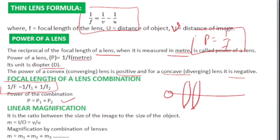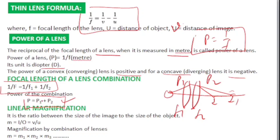For a combination of lenses, the object forms image I₁ through the first lens, and I₁ acts as object for the second lens, forming final image I. From this derivation, 1/f = 1/f₁ + 1/f₂ and P = P₁ + P₂. For magnification of a number of lenses in combination, the total magnification is the product: m = m₁ × m₂ × m₃.